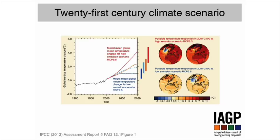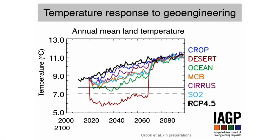So let's look at some results. We have time series showing the temperature trend, and I'm focusing on land temperatures because that's most relevant to where humans live. We look at the time series from the early 21st century through to the end. In black, you have the no-geoengineering RCP 4.5 scenario, which in our simulations delivered almost 2 degrees Celsius of warming from the end of the 20th century to the end of the 21st.